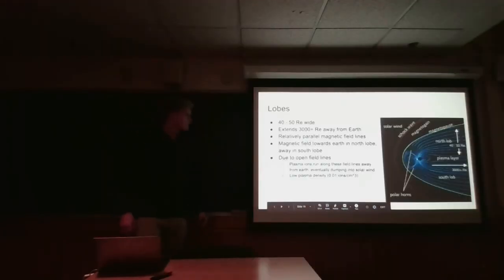Just to first talk about the north and south lobes, they are about 40 to 50 radius of Earth's wide, and they extend for 3,000 plus radiuses of Earth long. They go really far, which is in comparison to the sunward side of the magnetosphere, which gets compressed by the oncoming solar wind. And they're comprised of relatively parallel magnetic field lines.